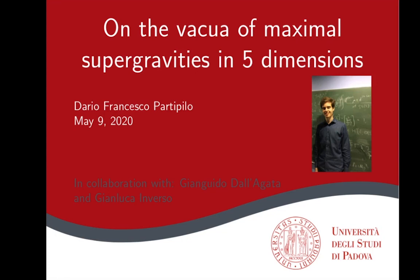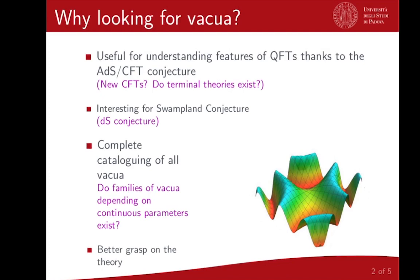Why did we study five-dimensional models? They are not interesting from a phenomenological point of view, as it is well known, but there are plenty of reasons to analyze those theories. The first, and more important, is based on the Anti-de Sitter conformal field theory conjecture. It is well established that the supergravity scalars represent couplings for the operators in the conformal field theories living on the boundary, especially for the relevant and marginal operators.